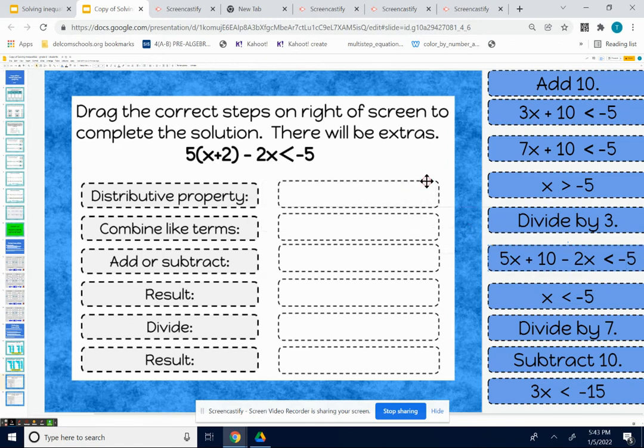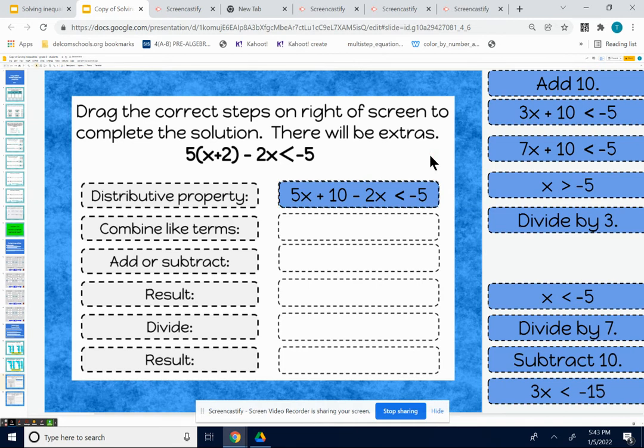So we have 5x plus 10 minus 2x less than negative 5. Second thing you want to do is to get any like terms together. We do have like terms. We have a 5x and a negative 2x. Combine those to be 3x. So we need to drag 3x plus 10 is less than negative 5. That would be our second step.